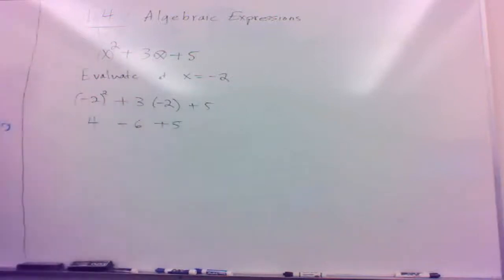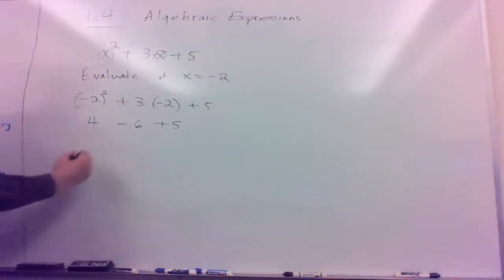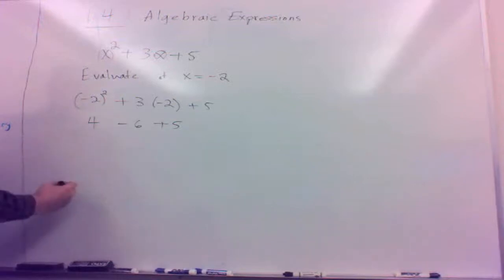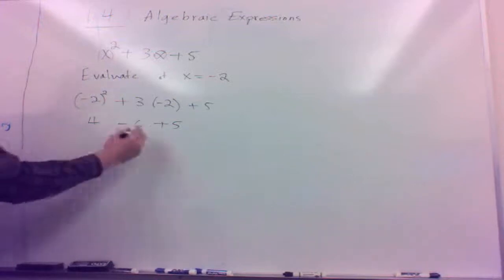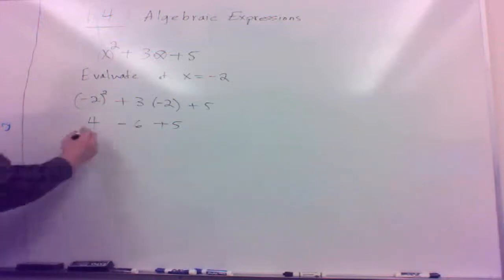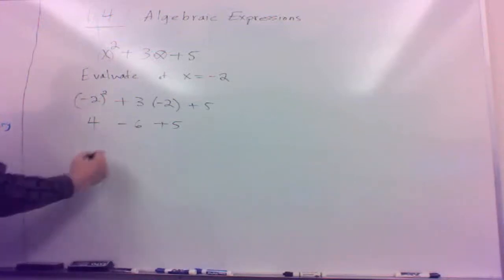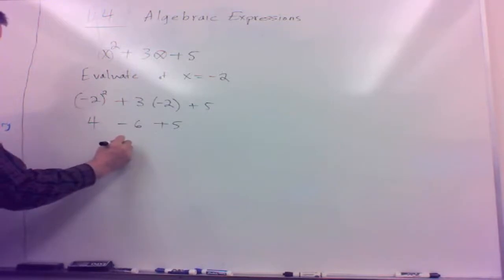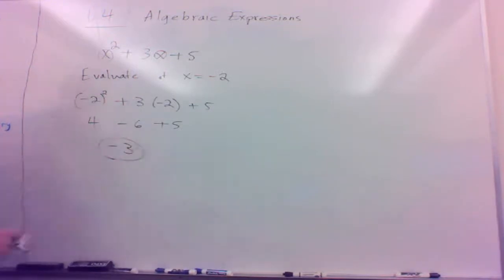And then the plus 5 comes in there. So we have 4 minus 6 plus 5. That gives us negative 2 plus 5, which would be 3.